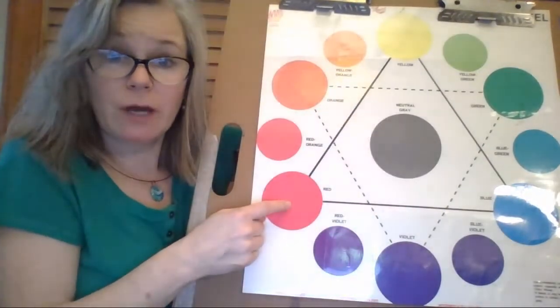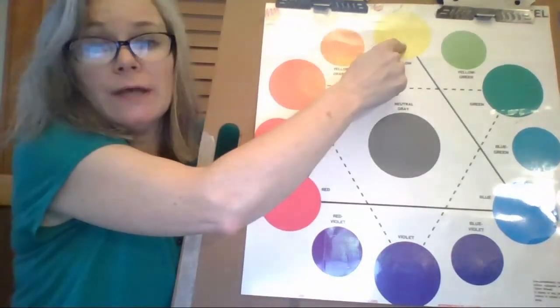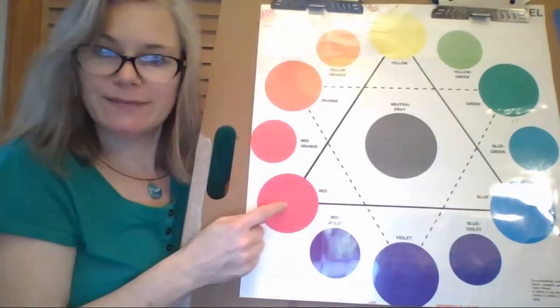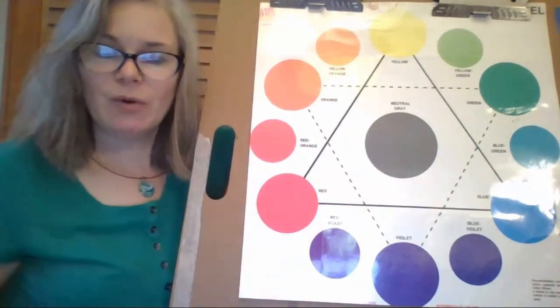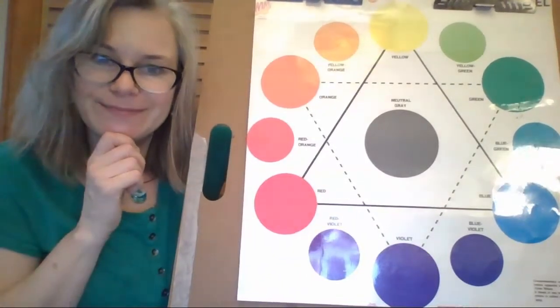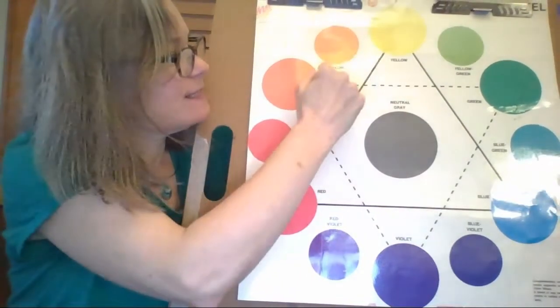So the primary colors are yellow, blue, and red. We also have another triangle. Can you see it? It makes a dotted line.